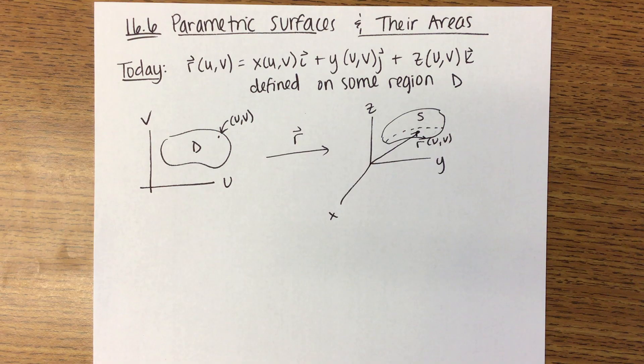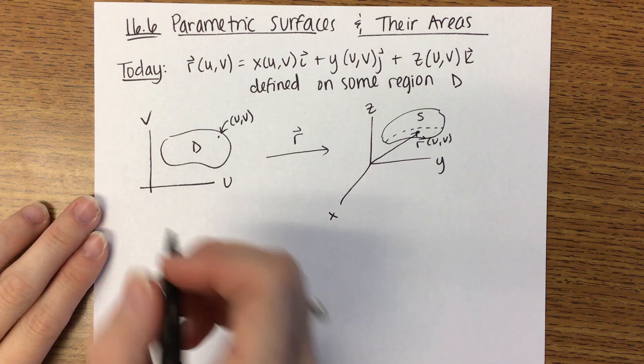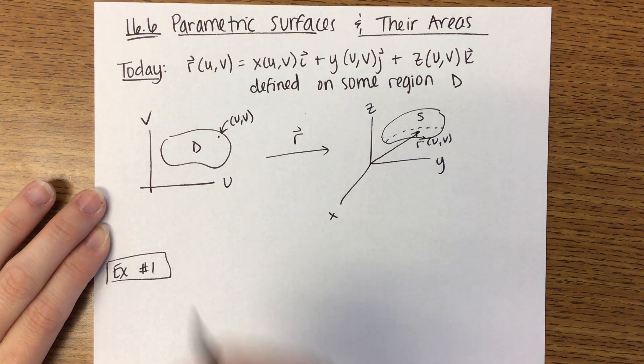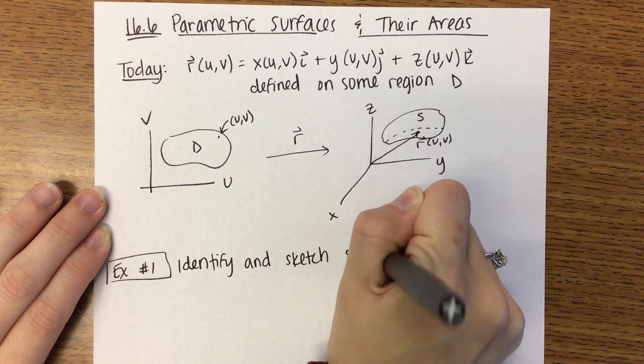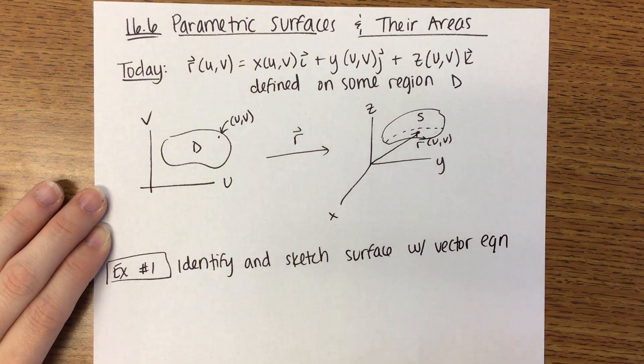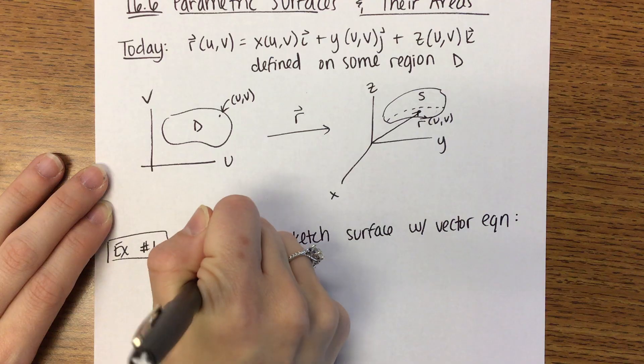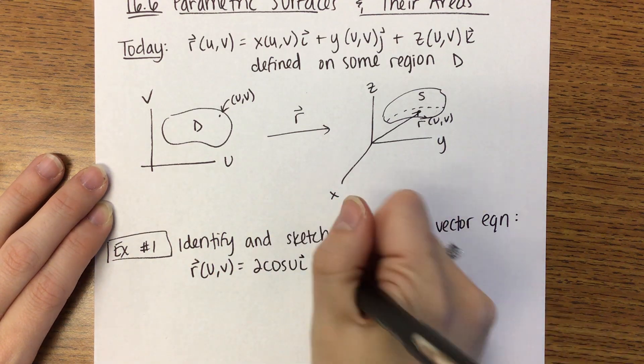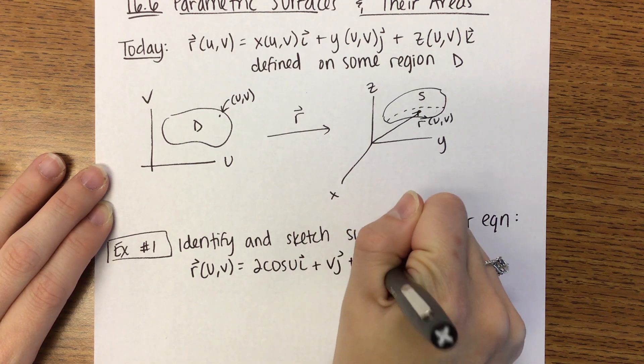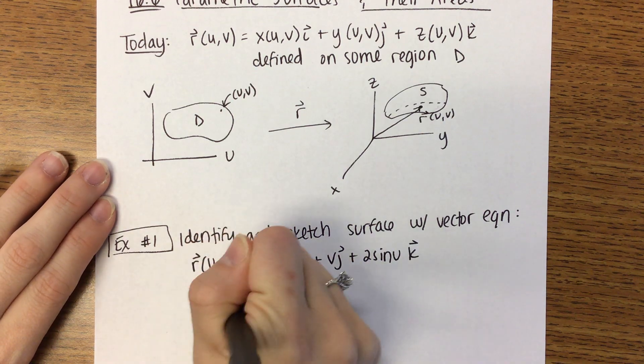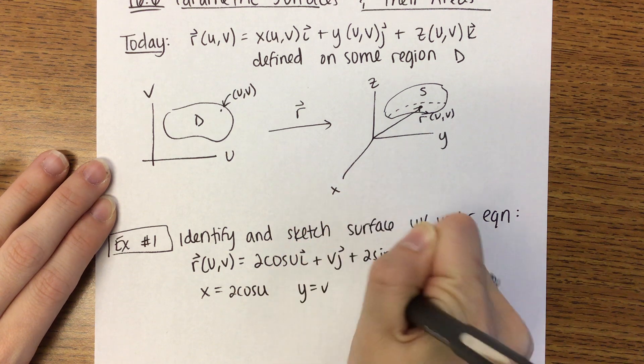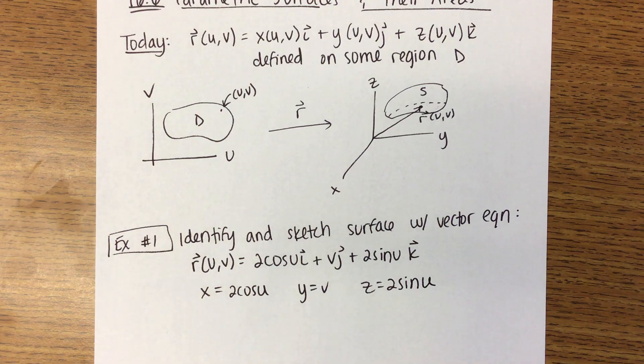First thing we're going to have to do is identify parametric surfaces. When I give you a parametric equation, you need to tell me what that looks like. First example: identify and sketch the surface with the following vector equation: R of U,V equals 2 cosine U times I plus V times J plus 2 sine U times K. First thing I'll do is split this up. X is 2 cosine U, Y equals V, and Z equals 2 sine U. These are the parametric equations.